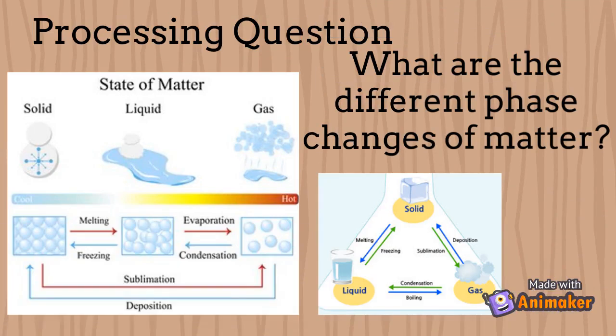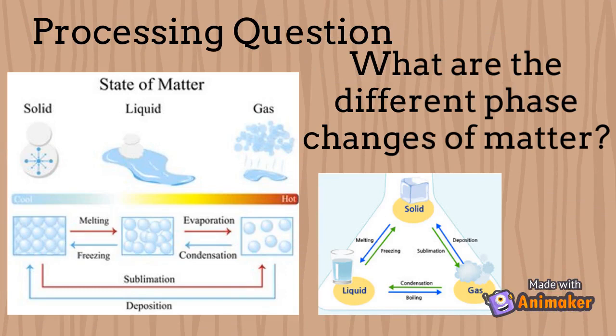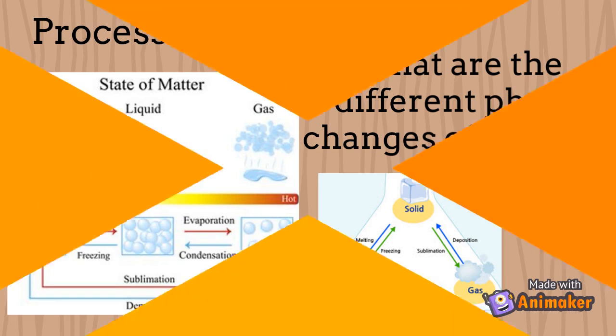The different phase changes of matter are: melting, freezing, evaporation, condensation, sublimation, and deposition. Phase change happens by absorption of energy or release of energy in the form of heat.